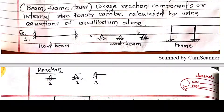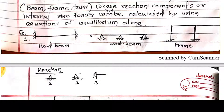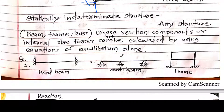Now look at this continuous beam. Let us calculate the reactions. This is a hinge support — 2 reactions. This is also a hinge support — 2 reactions. And this is a roller support — 1 reaction. So 2 + 2 + 1 = total 5 reaction components for this beam. But we have only 3 equations. So it is not possible to calculate all the reactions using 3 equations — the unknowns are 5 but we have only 3 equations. This beam is indeterminate.